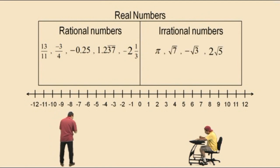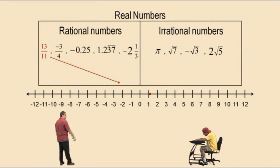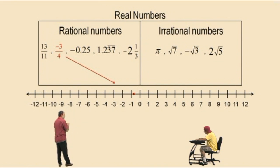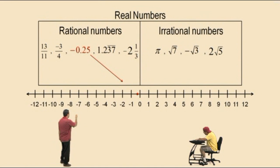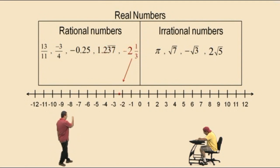Let's look at 13 elevenths — it's 1.18181818, so it lies a little bit past the 1. As a mixed number, 13 elevenths is 1 and 2 elevenths, so it's about there. Negative 3 fourths: negative 3 divided by 4 is negative 0.75, so it would be right there on the number line. Negative 0.25 — that's the same as negative 1 fourth — right there between 0 and negative 1. And 1.2373737... — notice the bar because the decimal goes on forever with a pattern — it's between 1 and 2. Negative 2 and one-third is right here, a negative number between negative 2 and negative 3.